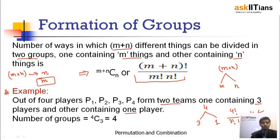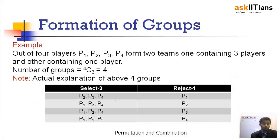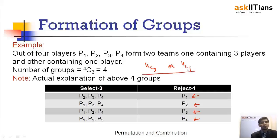Let's verify: if I reject P1, I get one team; reject P2 gives another team; reject P3 gives the third; reject P4 gives the fourth — so four teams total. Whether I reject one player (4C1) or select three players (4C3), both give 4, confirming the answer.